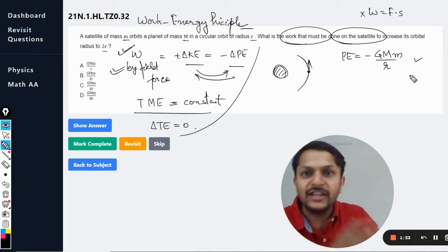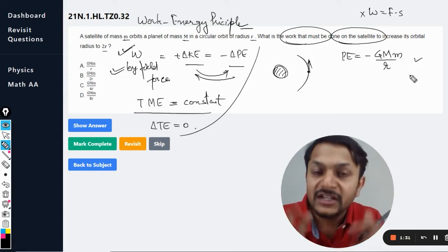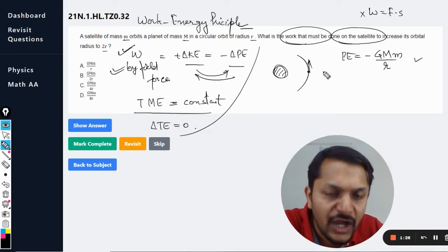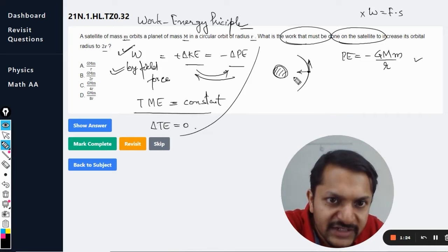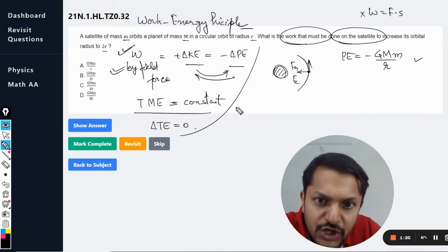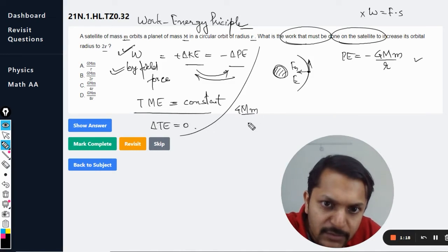Coming to the kinetic energy, how can we find that? So the centripetal force should be equal to the gravitation force, so GMm divided by r squared equals mv squared by r.